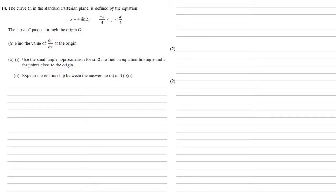Curve C in the standard Cartesian plane is defined by the equation x equals 4 sine 2y, for y between negative and positive pi over 4. The curve C passes through the origin O. We need to find the value of dy by dx at the origin.